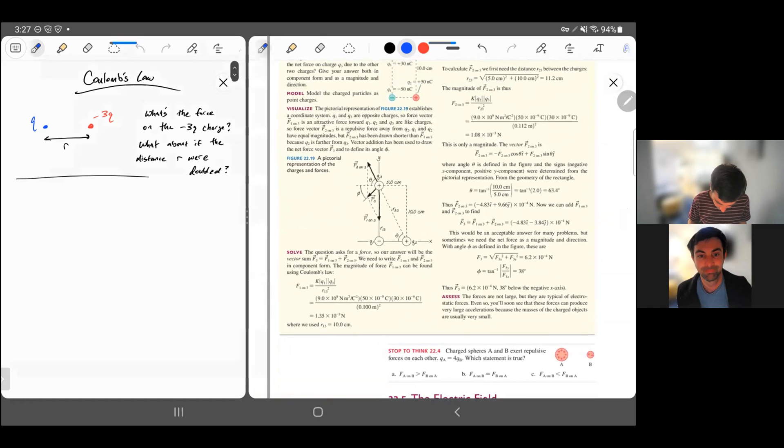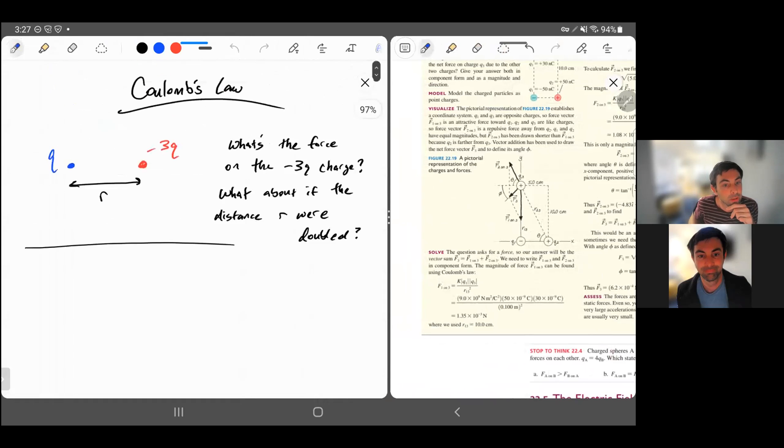So that takes us to the end of the section. This example problem: what is the force on the negative 3q charge? Lowercase q, we haven't said whether it's positive or negative, but we definitely know that these are opposite charges. Whatever q is, this is the opposite of that. If q is positive, then the blue one is positive, the red one is negative. If q is negative, then the blue one is negative and the red one is positive. Either way, it's an attractive force, so the direction is going to be to the left.